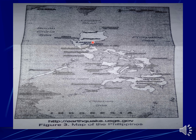Repeat the same process for Puerto Princesa and Davao. Puerto Princesa is 507 kilometers from the epicenter, so use a radius of 3.8 centimeters — position the compass needle at Puerto Princesa, measure 3.8 centimeters, and draw a circle. For Davao, locate it in Mindanao on the map, position the needle there, measure 2.4 centimeters, and draw a circle.